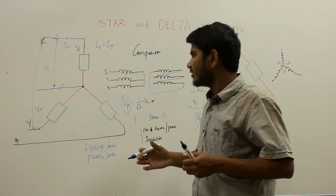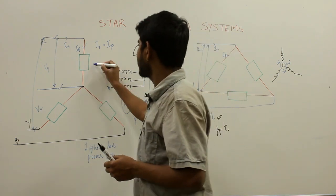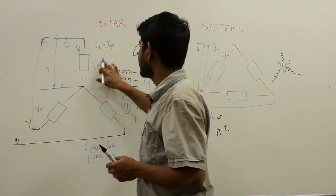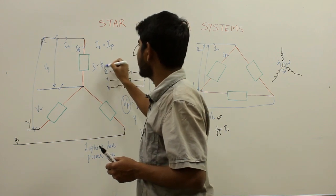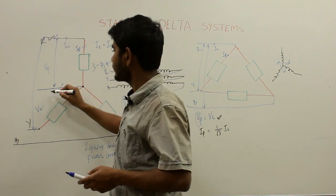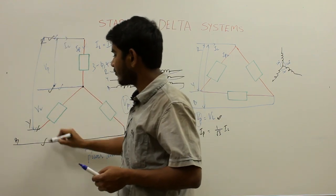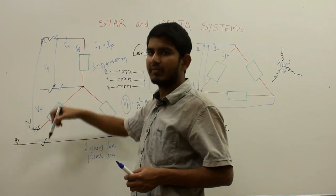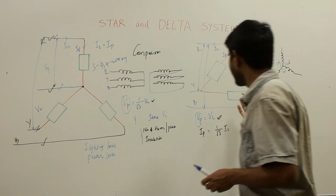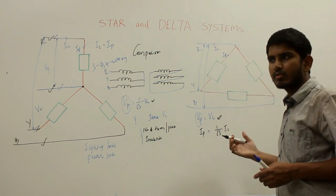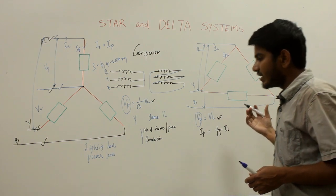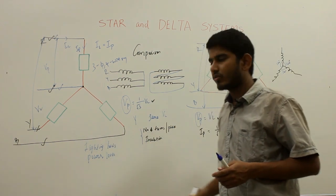Power circuits are connected between the lines. This arrangement is called a three-phase four-wire system — three phases plus the neutral wire going to the load end makes four wires. In the delta connected system there is no concept of neutral, so delta is not used to supply household loads.